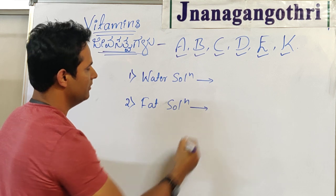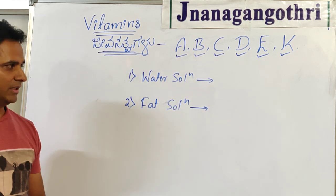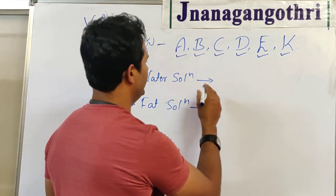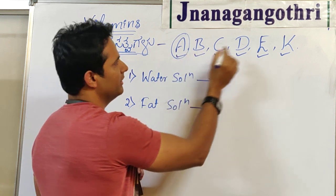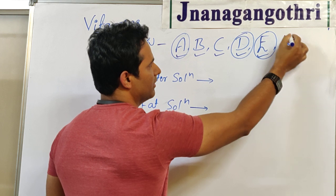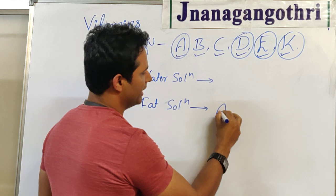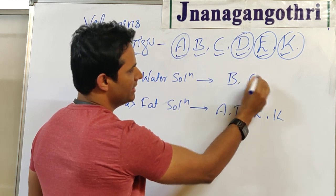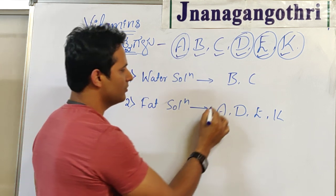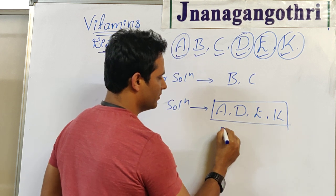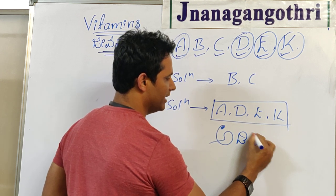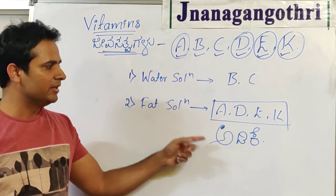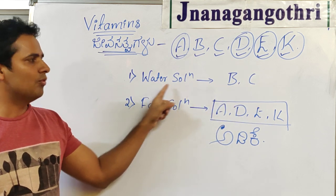The other one is fat-soluble vitamins. Vitamin A is soluble in fat. D, E, and K are also fat-soluble. So fat-soluble vitamins are A, D, E, K. Water-soluble vitamins are B and C. The shortcut to remember fat-soluble vitamins is the word 'ADEK' (like 'Aadike'): A, D, E, K. B and C are the only two water-soluble vitamins.